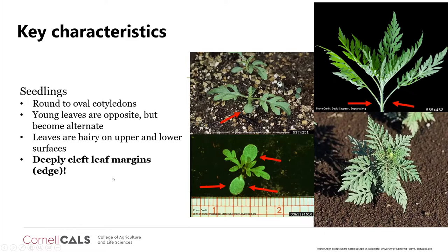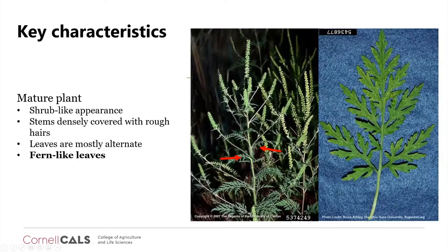The big identifier for common ragweed is its very deeply cleft leaf margins — 'margins' meaning the edges of leaves. For the mature plant, it has a shrubby appearance with stems densely covered in rough hairs and mostly alternate leaves.